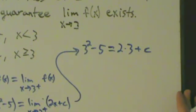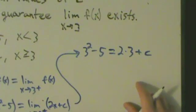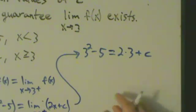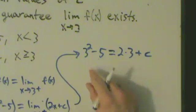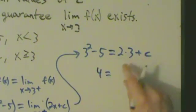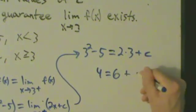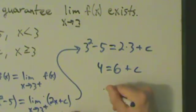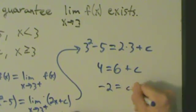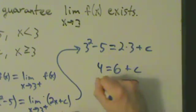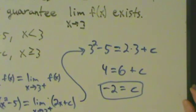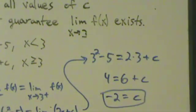So now what we have is just a linear equation here that we can solve directly with basic arithmetic. So 3 squared is 9, minus 5 is 4, 2 times 3 is 6, then we have plus c. So subtract 6 from both sides, then we have negative 2 equals c. And that's the only value of c that guarantees that this limit exists.